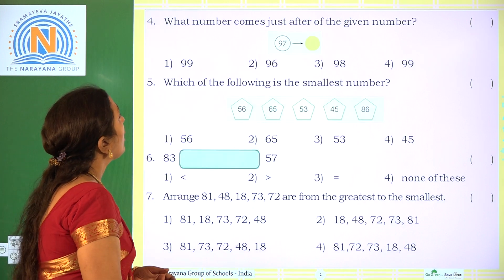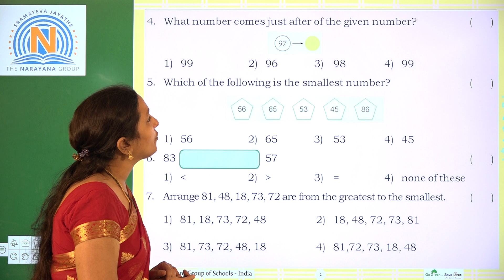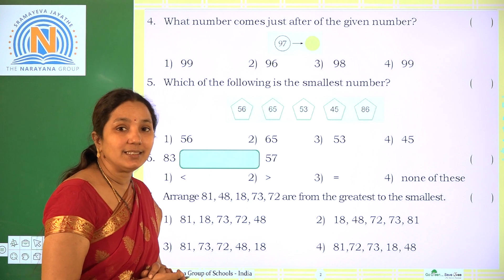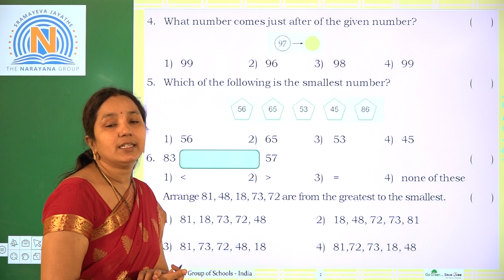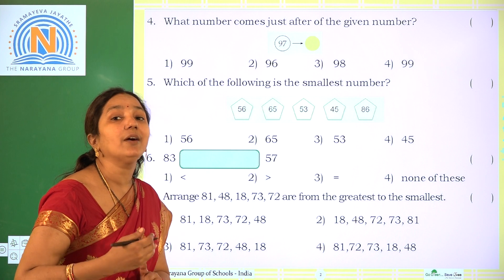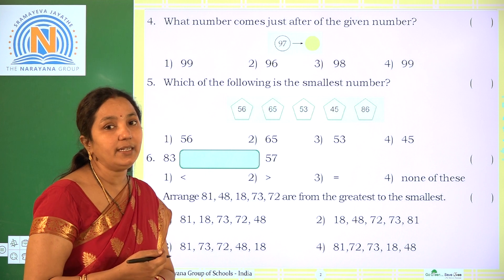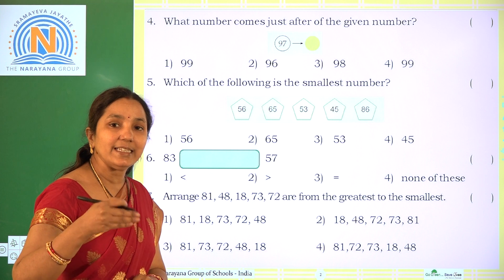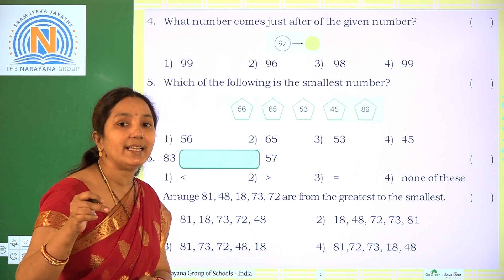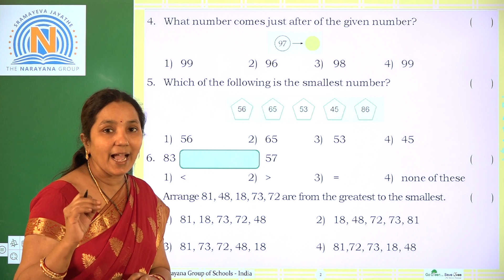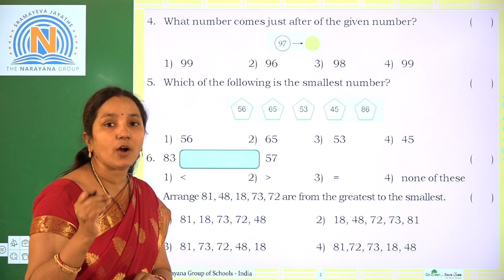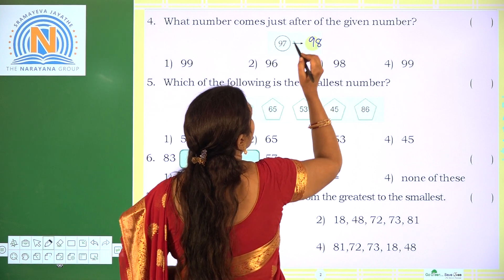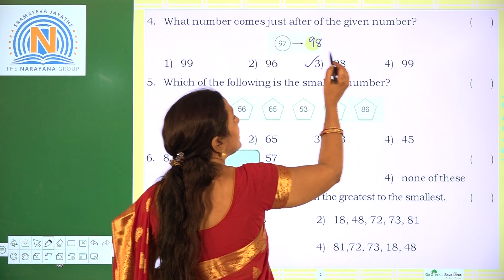Next one. What number comes just after the given number 97? We have to count forward. The forward number of 97 is 98. So just after 97 is 98. The required option is option 3.